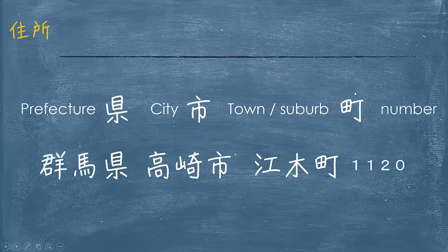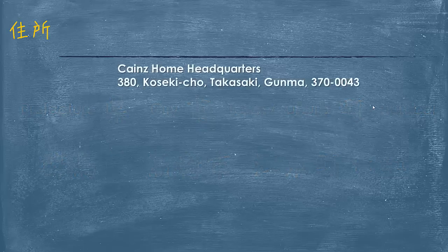And then the number. The general pattern is that we start with the larger area of land, getting down to the more specific area or place within that land. For example, Kaiin's home headquarters is located in Takasaki in Gunma prefecture.